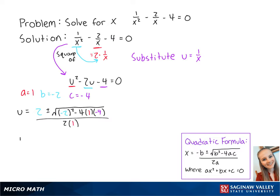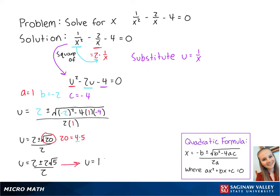This becomes u equals 2 plus or minus the square root of 20 over 2. The radical can be simplified because 20 equals 4 times 5, and the square root of 4 is 2. So we have u equals 2 plus or minus 2 times the square root of 5 over 2. Dividing the numerator by 2, we get u equals 1 plus or minus the square root of 5.